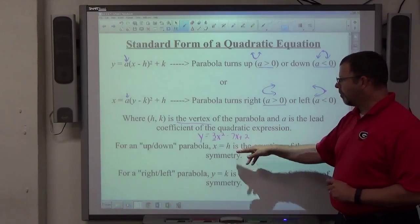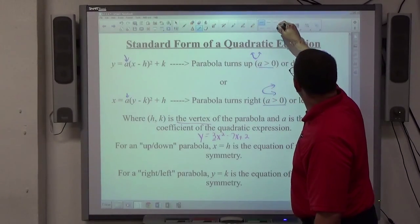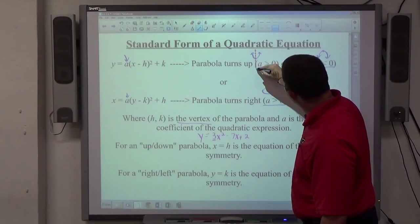For an up-down parabola, the axis of symmetry is a vertical dotted line that goes through the vertex.